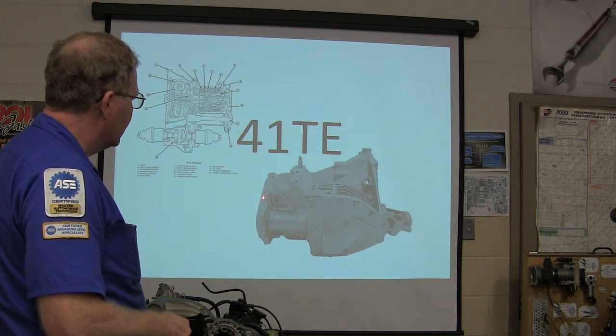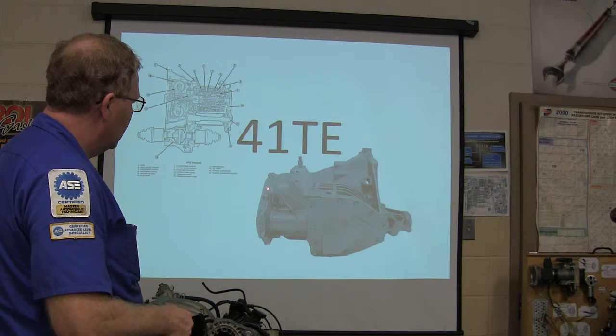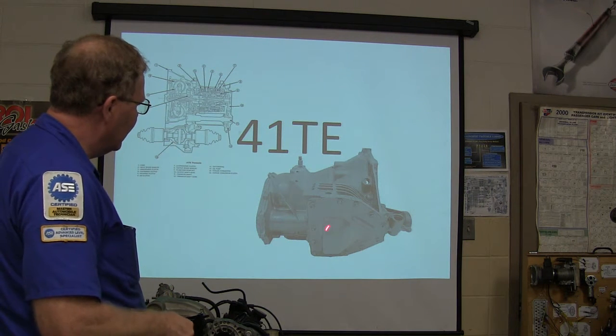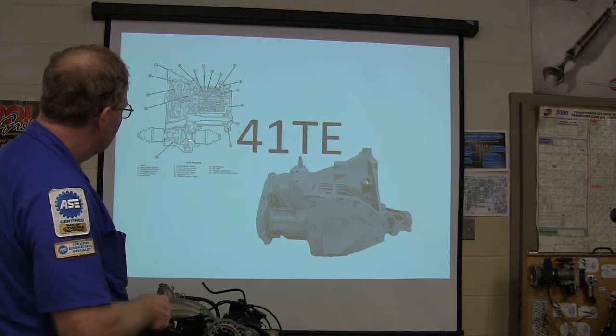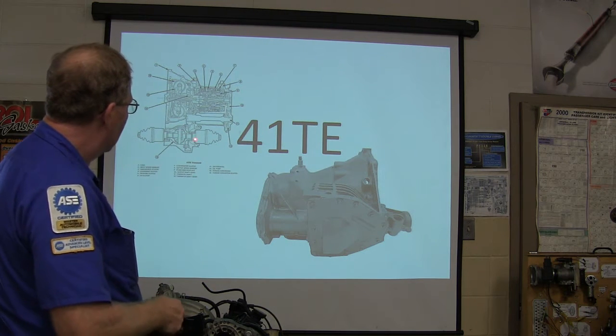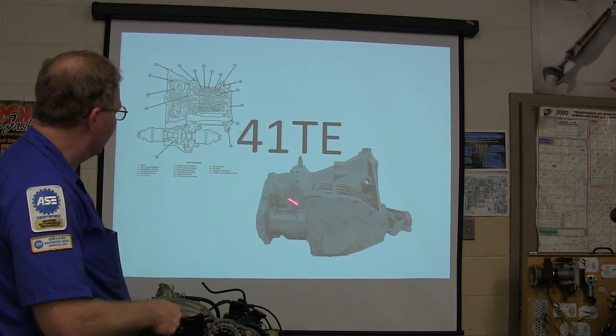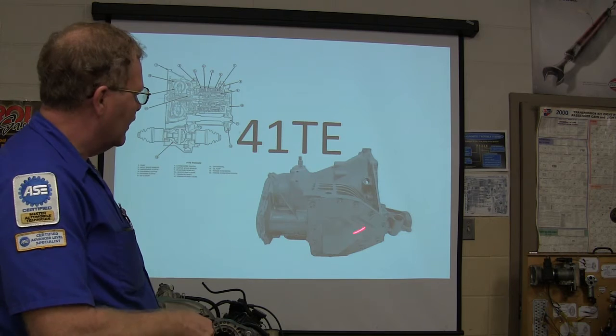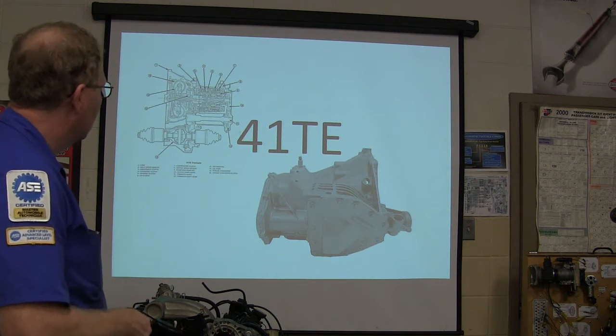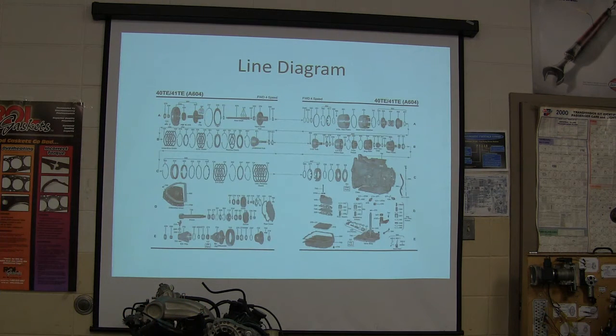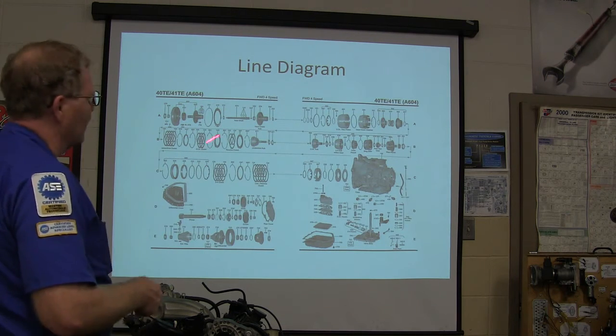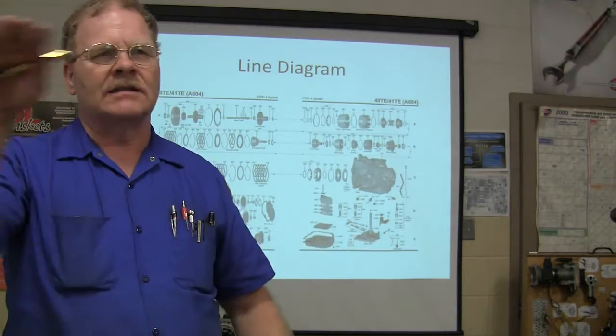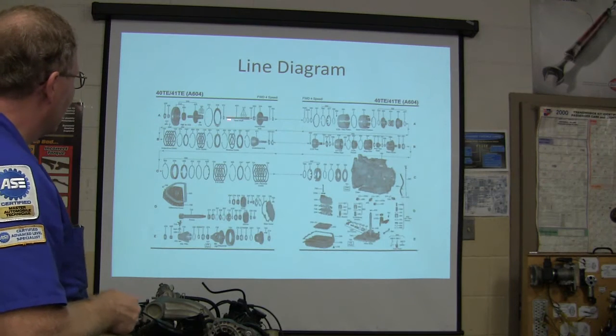This is kind of an unusual transaxle in that regard. You notice on the back, you've got two gears that are matched. There's a shaft going forward, and that's where your final drive is right there. Unlike the Toyota one out there, they're always in the same housing. So basically, there's what you call a line diagram.